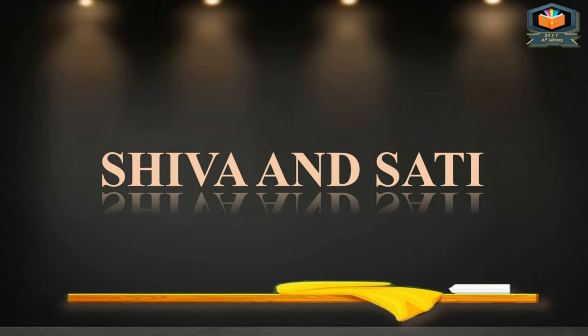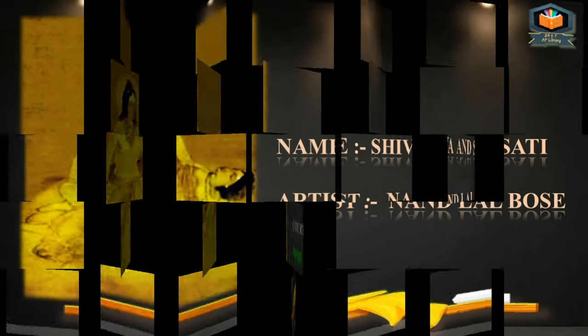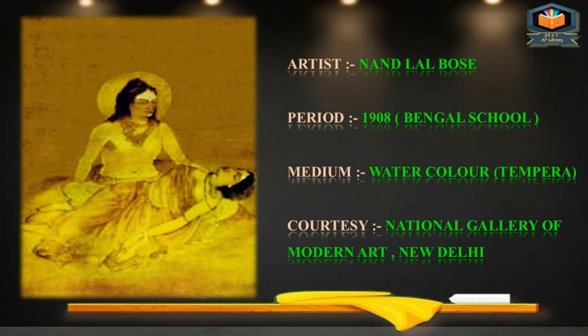We will discuss this painting of the Bengali school. The picture you are seeing on the screen is a monochromatic painting of Bengali school named Shiva and Sati. The artist who painted this picture is Nandlal Bose. The period is 1908, Bengali school. Medium: watercolor and tempera. Cottage, National Gallery of Modern Art, New Delhi.